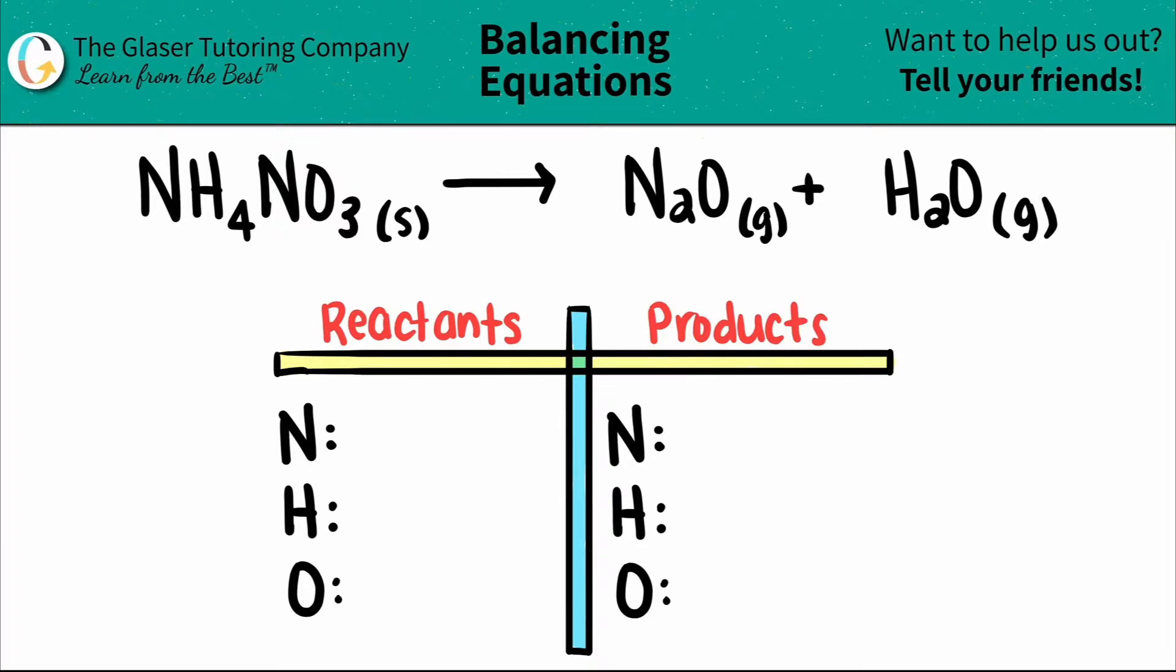Today we are going to be balancing the equation of ammonium nitrate, which is NH4NO3, and that will yield or decompose into N2O plus H2O. I already wrote out our chart and all the elements that I see on the left and the right side. All we have to do is just put the numbers in.